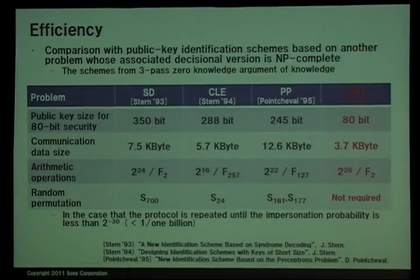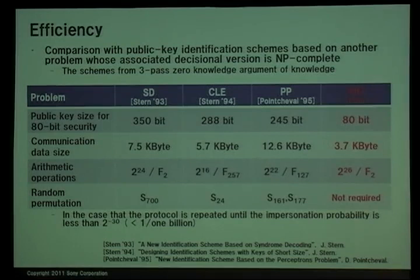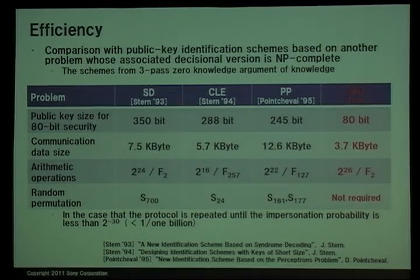We compare with public key identification schemes based on other problems whose associated decision version is NP-complete. Especially, we consider schemes from 3-pass zero-knowledge arguments of knowledge. This table shows the public key size for 80-bit security, the communication data size, the number of arithmetic operations, and required random permutations. These figures are for the case that the protocol is repeated until the impersonation probability is less than 2 to the power of minus 30, which is less than 1 billionth. As you can see, the performance of our scheme is highly comparable. Especially, the public key size is very small — only 80-bit. In addition, our scheme does not require any random permutation.